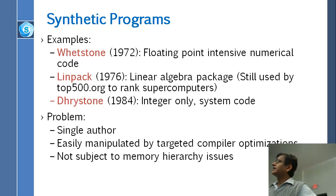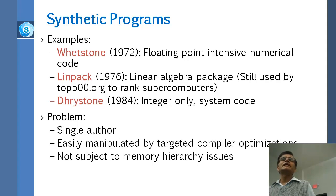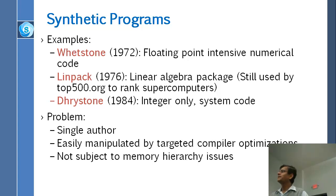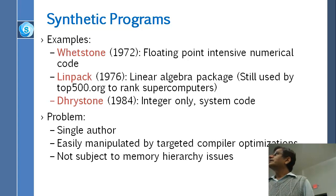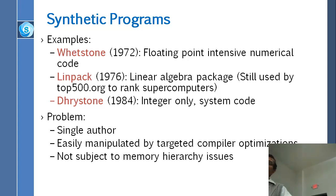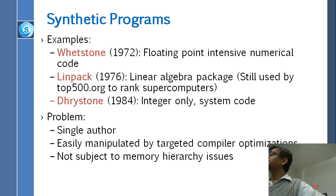Some famous benchmarks: Whetstone, one of the very early benchmarks from 1972, is named after a place in England. It was a floating-point numerical code. LINPACK is a linear algebra package from 1976 by a professor at UNC, and it became so famous it is still used today. At top500.org they list the top 500 supercomputers in the world ranked by the LINPACK benchmark — every supercomputer runs it and is ranked by performance.